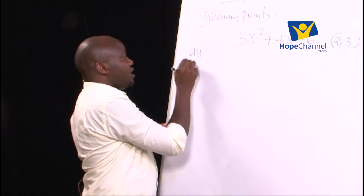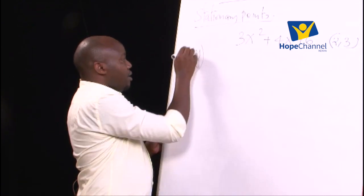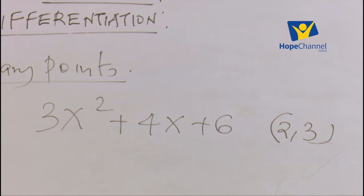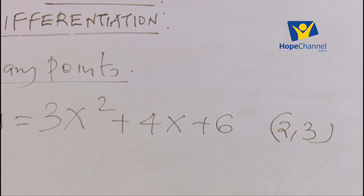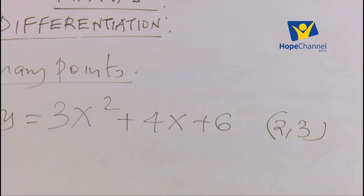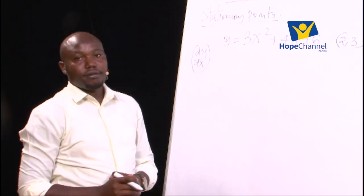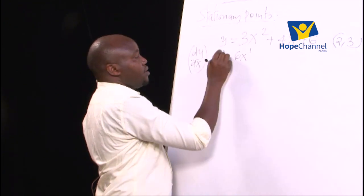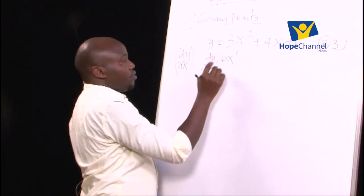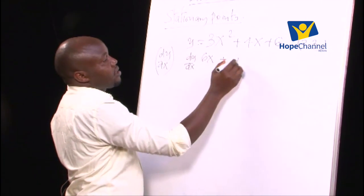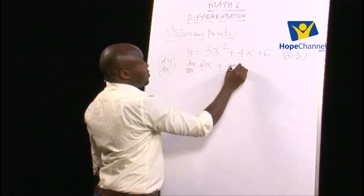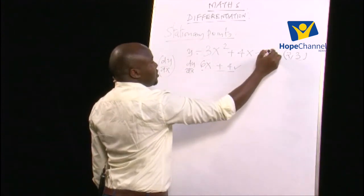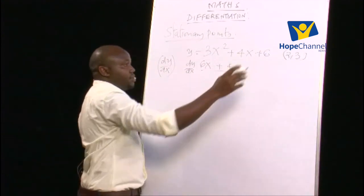First of all, differentiation. The notation for differentiation is dy/dx because we are using y and x. How do you differentiate? 2 times the coefficient gives 6x to the power 1, so dy/dx = 6x + 4. The constant disappears because it's like having x to the power 0, and 0 times 6 is 0.